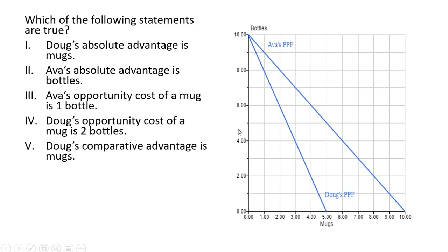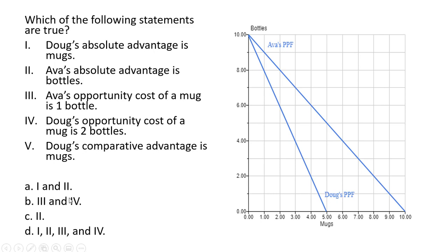Statement 3: Ava's opportunity cost of a mug is 1 bottle. Looking at Ava's PPF, we take the vertical intercept of 10 and divide by the horizontal intercept of 10: 10 divided by 10 gives us 1 bottle. That is correct. Statement 4: Doug's opportunity cost of a mug is 2 bottles — 10 divided by 5 gives 2 bottles. That's true. Statement 5: Doug's comparative advantage is in mugs — no, that's incorrect. Doug gives up 2 bottles every time he produces a mug, whereas Ava only gives up 1 bottle. So the correct answers are just statements 3 and 4.